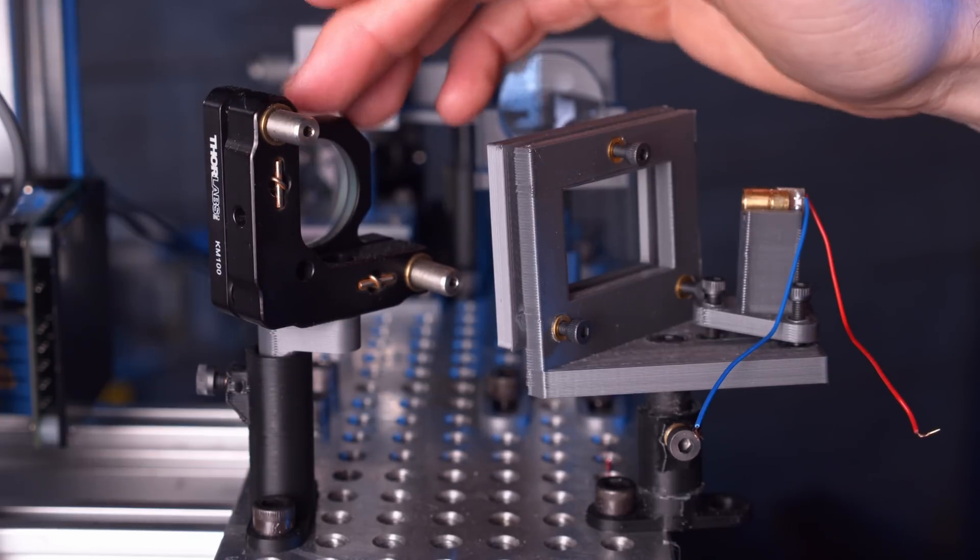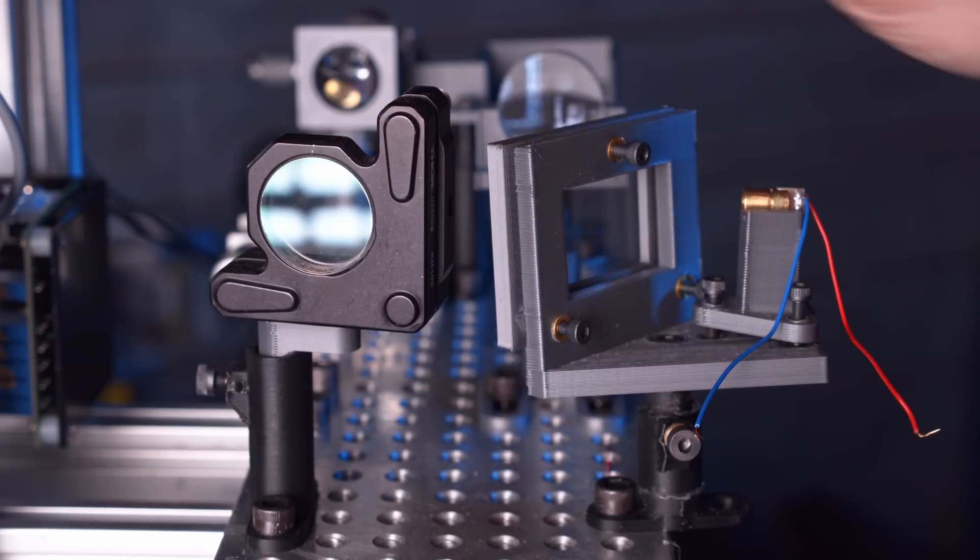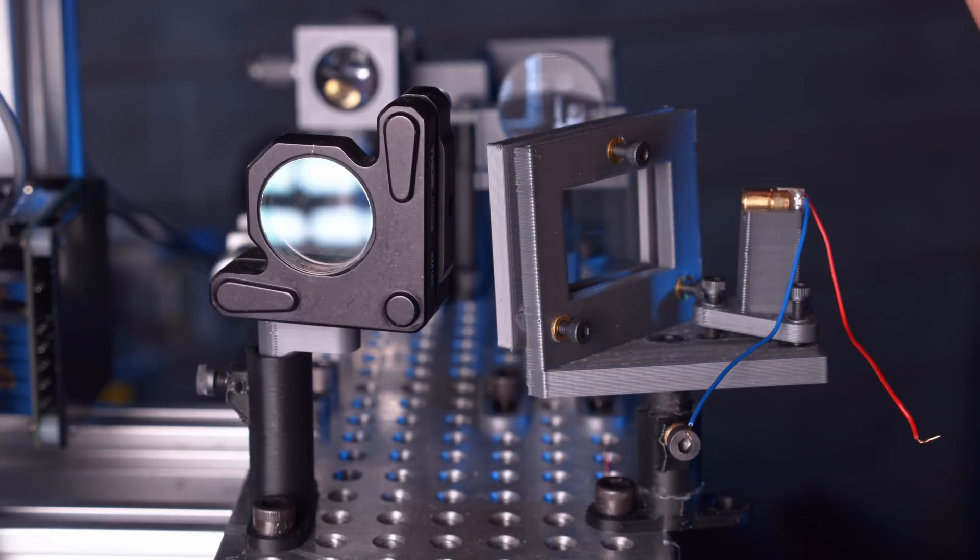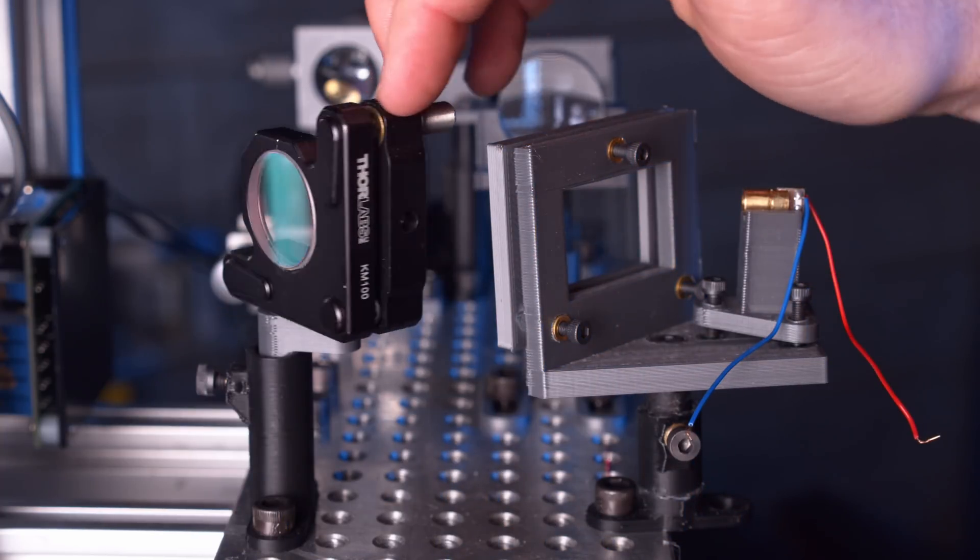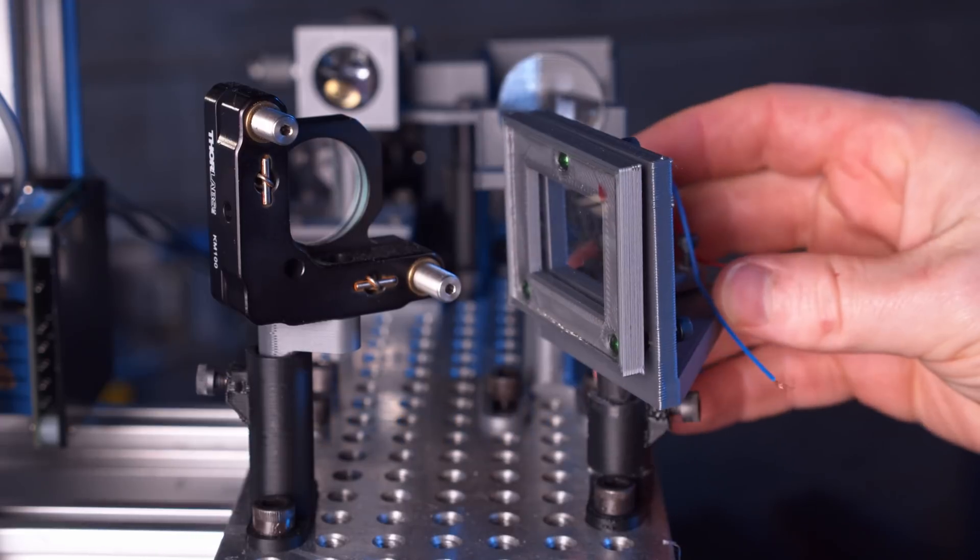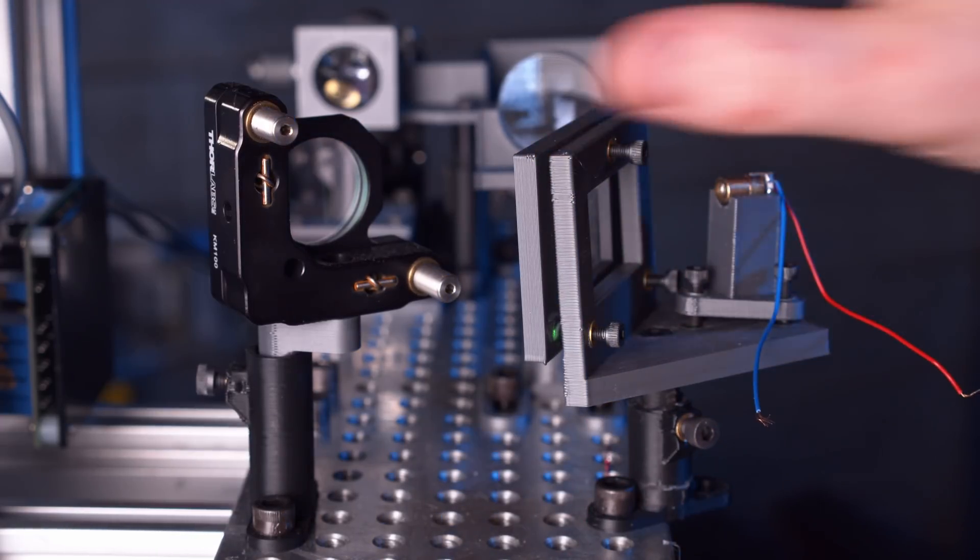I chose to use this kinematic mount here simply because it had the dichroic that I needed. This is something I purchased off eBay from like a used lot, and it happened to have a nice dichroic mirror of the right wavelength, which is why it got used in this location. But really, I could have used a 3D printed mount like this one, and it would have worked fine for this application.